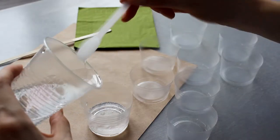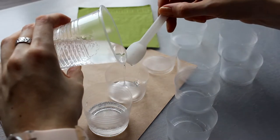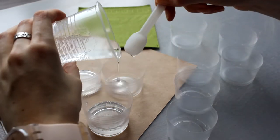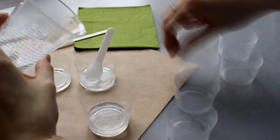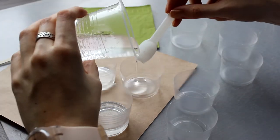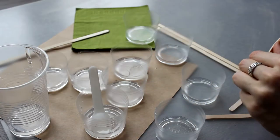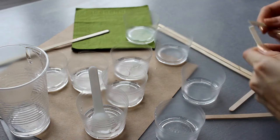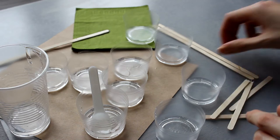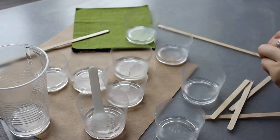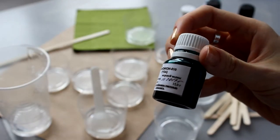And then I pour resin into the disposable plastic cups to color it. I break coffee sticks in two because I don't need them to be that long, and if you break them in two, you get twice as many sticks.